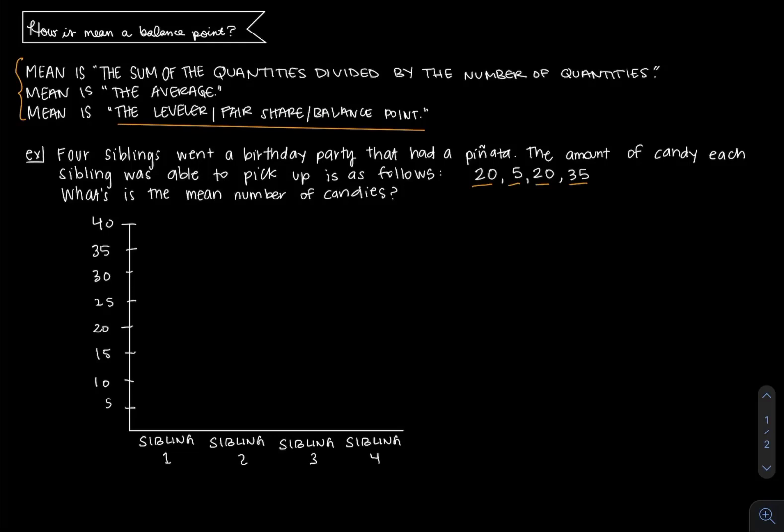You could just add up the four numbers and divide by the total number there. But that's not very clear as how mean is a leveler. It's just a calculation that you're doing.